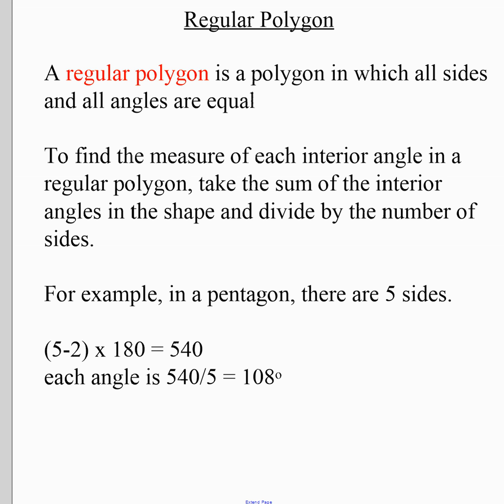All you have to do is find the sum of the interior angles of that polygon, then divide by the number of sides. For example, a pentagon has five sides, so you can make three triangles: 5 minus 2 is 3, and 3 times 180 gives 540 degrees. For a regular polygon, since all angles are the same, divide by five to get 108 degrees for each individual angle.